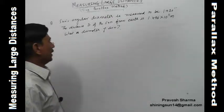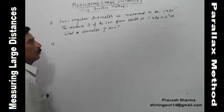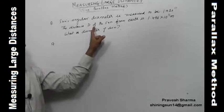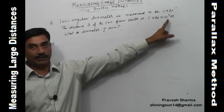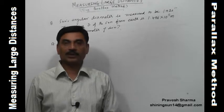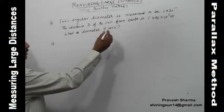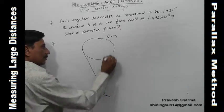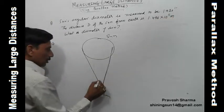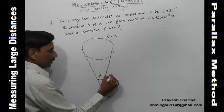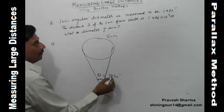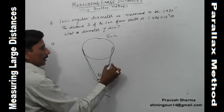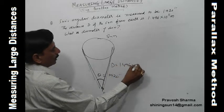The next question from the textbook: the Sun's angular diameter is measured to be 1920 arc seconds. The distance d of the Sun from Earth is given as 1.496 × 10¹¹ meters. What is the diameter of the Sun? From Earth we observe the angular diameter of the Sun — θ = 1920 arc seconds — and the distance d = 1.496 × 10¹¹ meters is given.